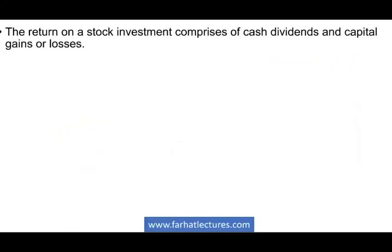So what we need to look at first is how to value a stock. How do we value a security, especially a stock? The return on a stock investment comprises of two things: cash dividend and capital gains or losses. When you buy a stock — assuming it's a dividend-paying stock — you expect to get dividends back, and you'll get some capital appreciation. The stock goes up, which is called the capital gain. The stock could also go down, and you could have a capital loss. Those are the two main components of your return on investment.